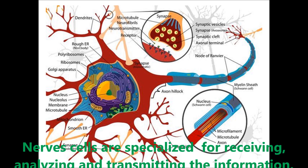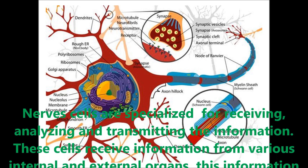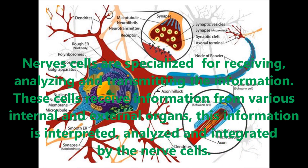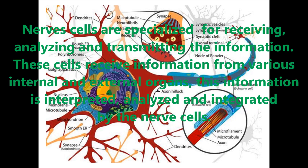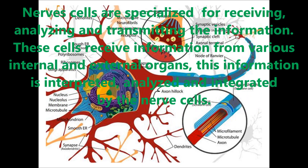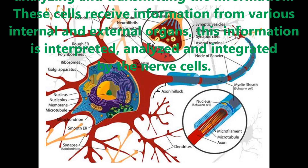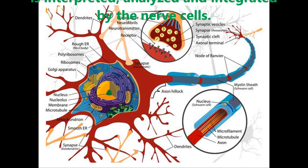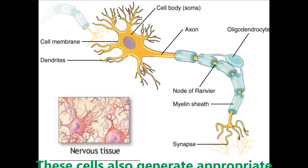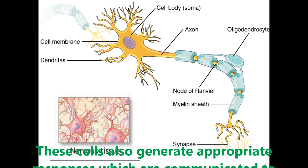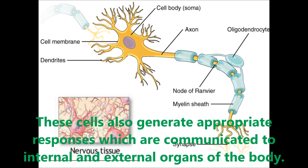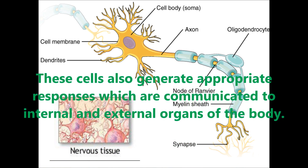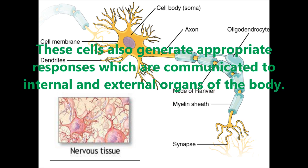Nerve cells are special for receiving, analyzing, and transmitting information. These cells receive information from various internal and external organs. This information is interpreted, analyzed, and integrated by the nerve cells. These cells also generate appropriate responses which are communicated to internal and external organs of the body.